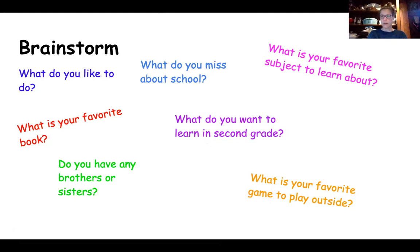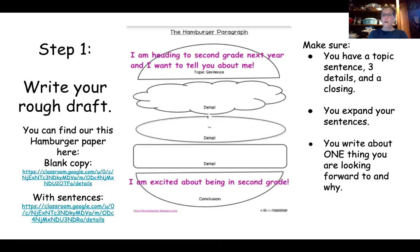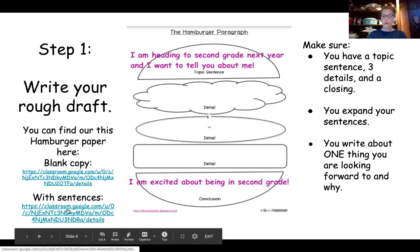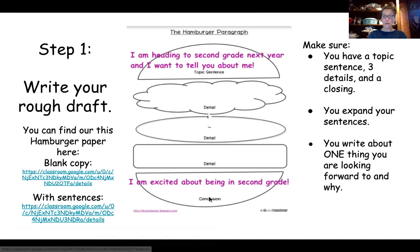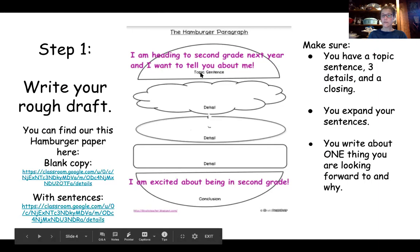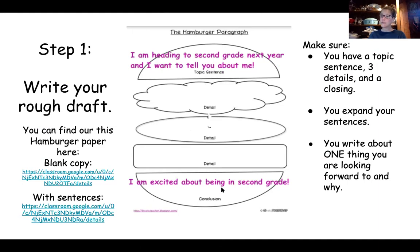You need to come up with a topic sentence, three details about yourself that you want your second grade teacher to know, and a closing sentence — then your writing is done. Step one is the hamburger template and you need to write your rough draft. I have two hamburgers: a blank copy without the purple sentences, and one with the purple sentences. If you're having a hard time thinking about what your topic sentence and closing sentence should be, you can use those. The topic sentence I wrote says: 'I am heading to second grade next year and I want to tell you about me.' Then three details about you, and the closing is: 'I am excited about being in second grade.'